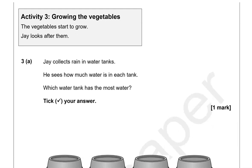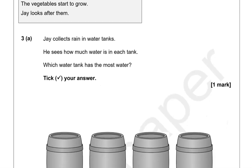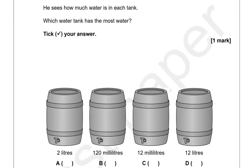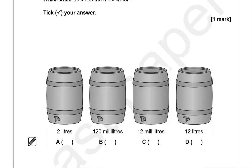Activity 3: Growing the Vegetables. The vegetables start to grow and Jay looks after them. Jay collects rain in water tanks and checks how much water is in each tank. Which water tank has the most water? Litres are much bigger than millilitres. Focusing on 2 litres and 12 litres — 12 is greater than 2, so tank D holds the most water.